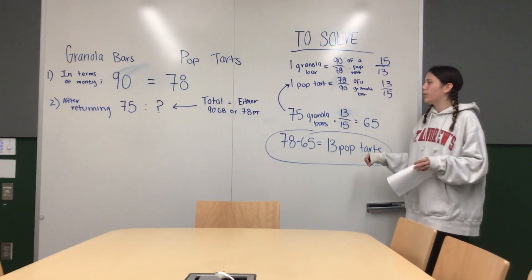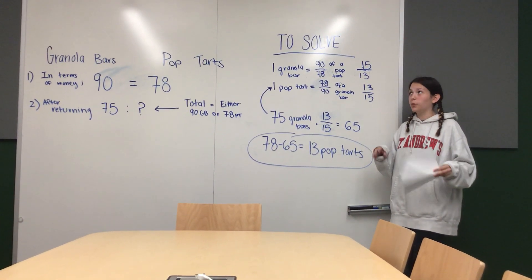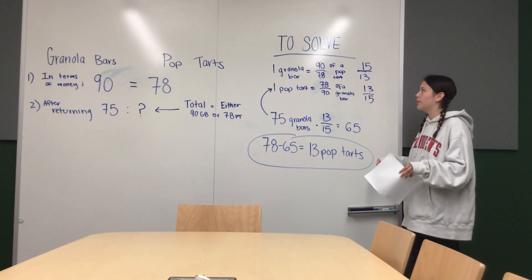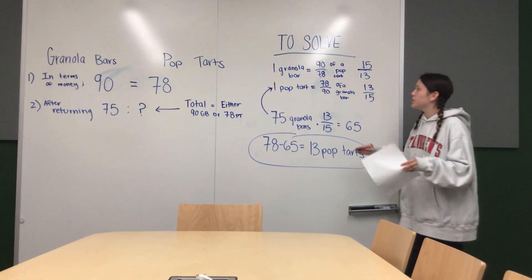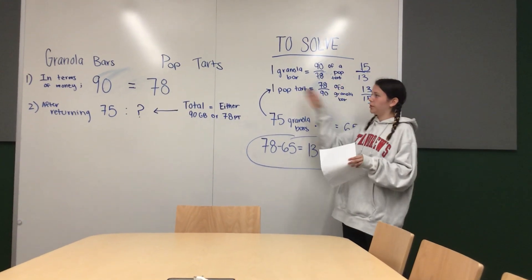So then we can figure out what one granola bar is equal to in terms of Pop-Tarts, and then what Pop-Tarts are equal to in terms of granola bars by dividing them. So one granola bar is equal to 90/78ths of a Pop-Tart, which is a little bit greater than one.